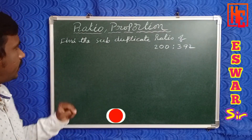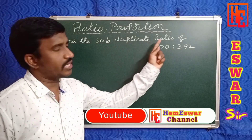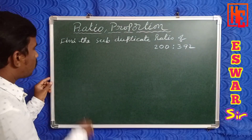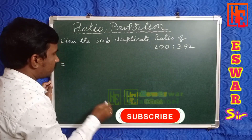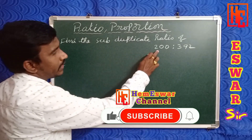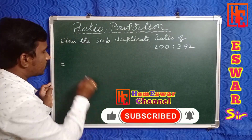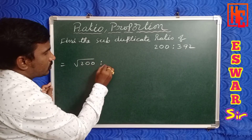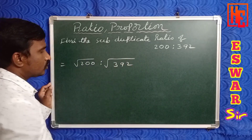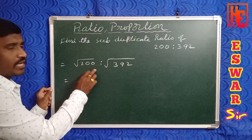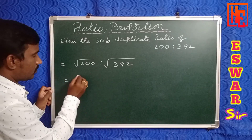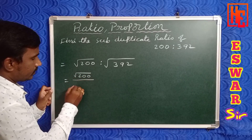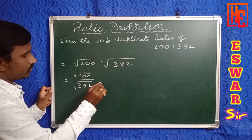Take one more example: find the sub-duplicate ratio of 200 is to 392. Sub-duplicate means square root, so we need √200 is to √392. Since ratio is a division or fraction, this equals √(200/392). Simplify: 200/392 = 100/196.